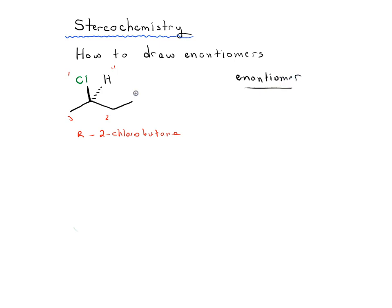So how would you draw the enantiomer of this? You could try to draw its mirror image — you could align it to show the mirror plane. That's one way to do it, but you'll find it's actually a very lengthy process. The simplest way, which doesn't take much time at all, is to do a single swap or inversion of the stereocenter.